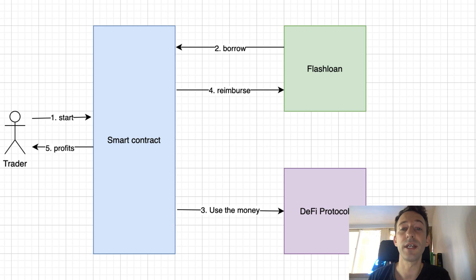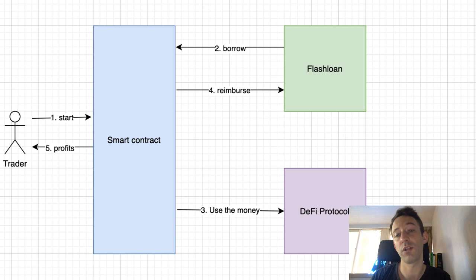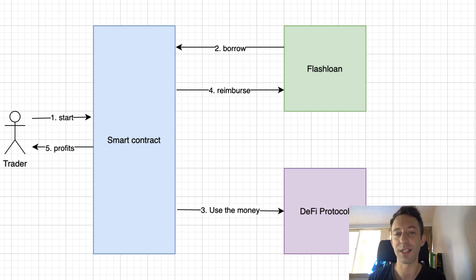You borrow the money, it's in your smart contract, and now you can do whatever you want with it. You use the money to invest in another DeFi protocol and hopefully make some profit. After that, you reimburse the flash loan — the amount you initially borrowed plus a small fee — and hopefully you still have a profit left.